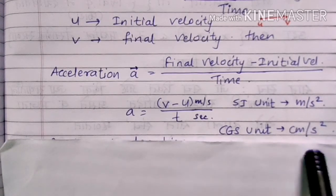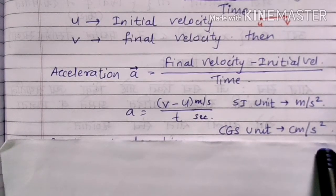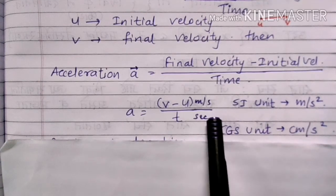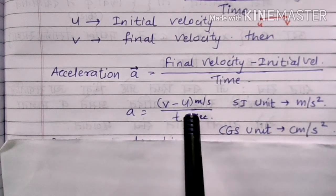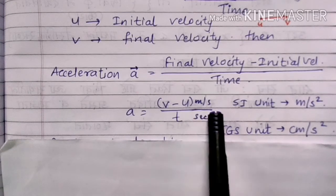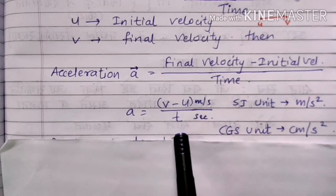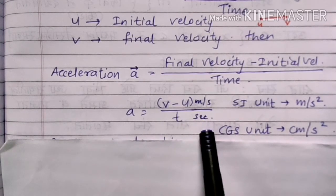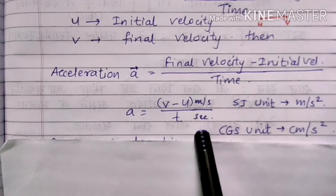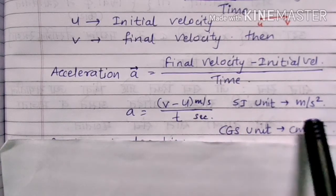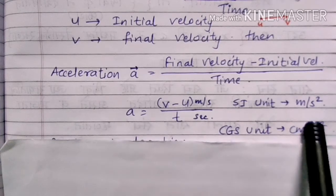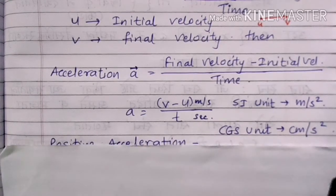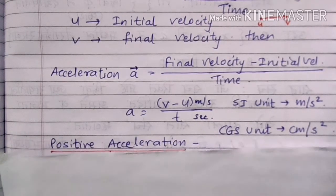The SI unit of acceleration is meter per second squared, and the CGS unit is centimeter per second squared. V minus U is velocity, taken as meters per second, and T (time) is in seconds. Therefore, meter per second divided by second gives meter per second squared.